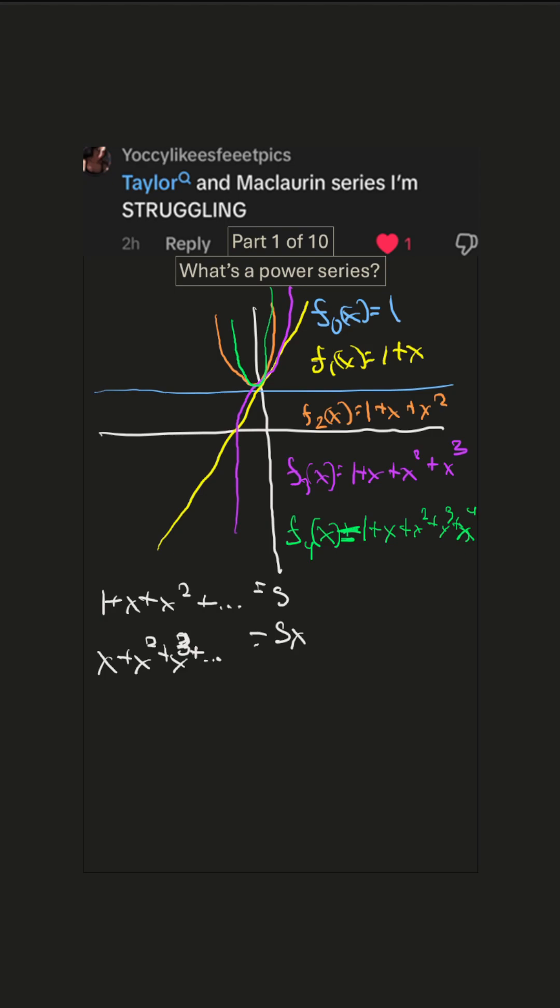And then if we subtract s minus xs, then we're going to get a whole bunch of cancellation. This will cancel that. And all of them except one. We'll be left with one.